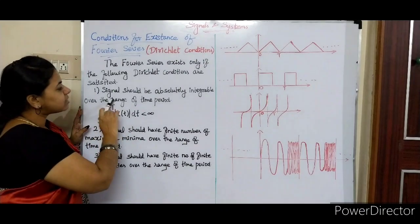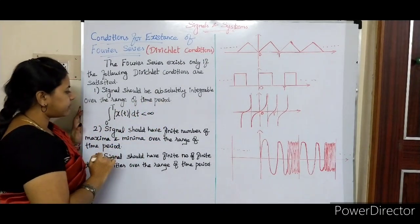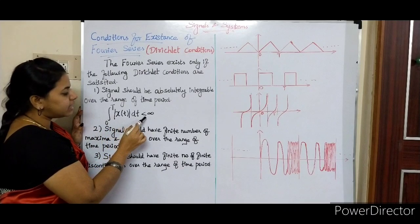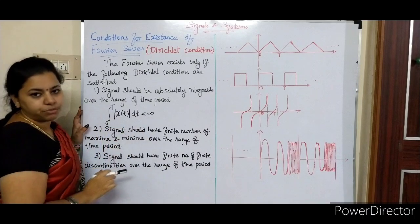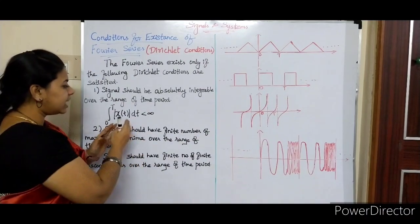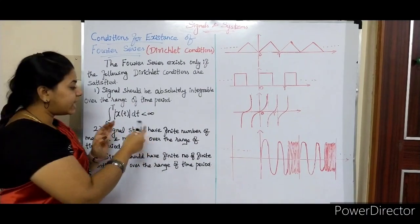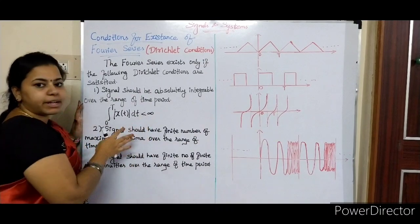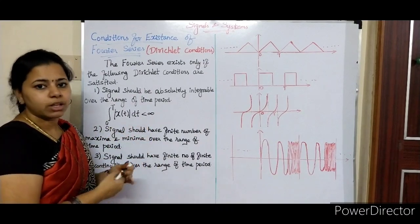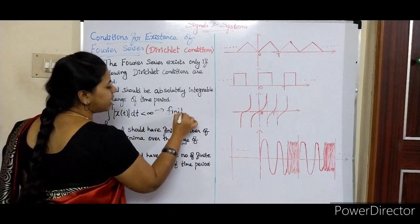First point: the signal should be absolutely integrable over the range of one time period. That means the integral of x(t) dt should be less than infinity. What I am saying is that if you evaluate this integral, the answer should be less than infinity — less than infinity meaning a finite value.